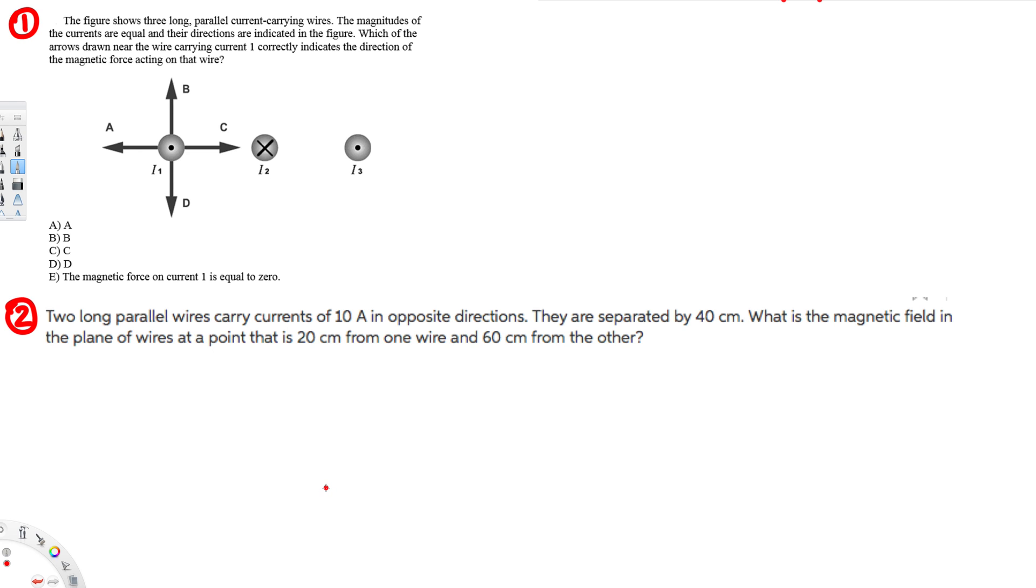Hey, what's going on guys, let's do this problem right here. The first question is asking: the figure shows three long parallel current-carrying wires. The magnitudes of the currents are equal and their directions are indicated in the figure. Which of the arrows drawn near the wire carrying current one correctly indicates the direction of the magnetic force acting on the wire?